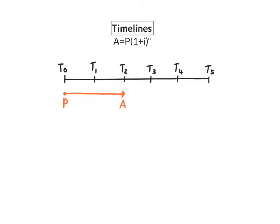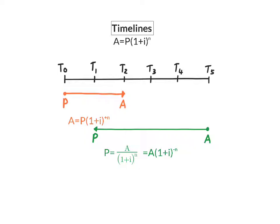To do this, we are going to use our compound interest formula with a positive exponent for the positive period that has gone by. If we, however, know the value of the account later on in the timeline, we can move backwards on the timeline and determine the value of the account at an earlier stage. This will be done by removing all the interest that has accumulated, or by dividing away the interest. Because if we think about our formula, to get the P-value, we will take our A-value and divide by the bracket, and this can of course be rewritten with a negative exponent. So in short, to move forward on your timeline you will always use a positive exponent, and to move backwards, a negative exponent.